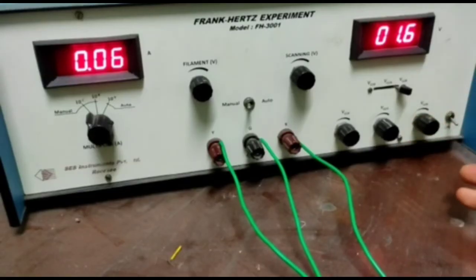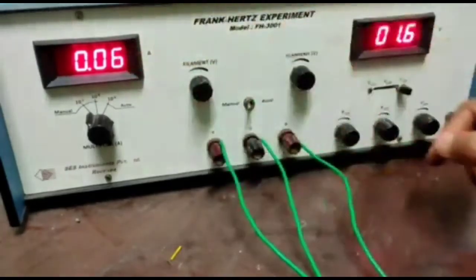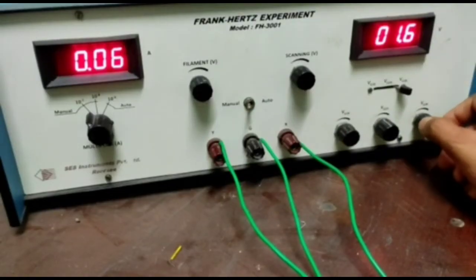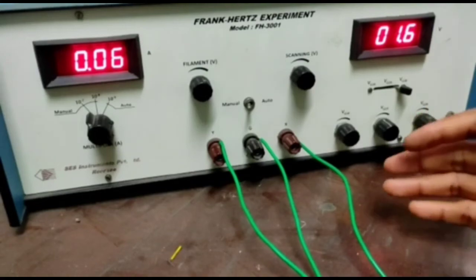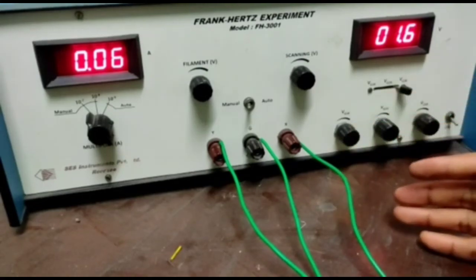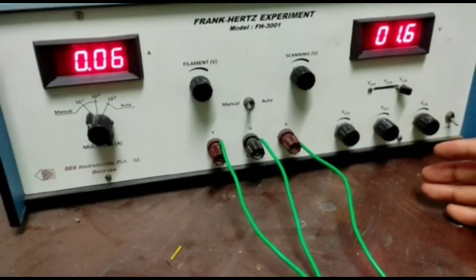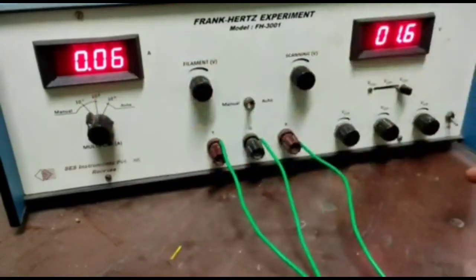The experiment can be done with the other values also. Now, rotate this VG2K knob and note down this plate current. Observe the variation of the plate current with the increase of this VG2K. The current reading would show maxima and minima periodically. The magnitude of the maxima would be adjusted suitably by adjusting the filament voltage and the value of the current multiplier. Now, take the systematic reading that is VG2K versus plate current.